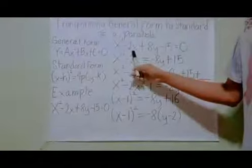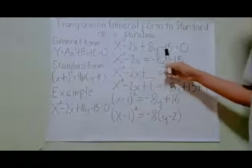First, let us copy the example: x squared minus 2x plus 8y minus 15 equals 0.